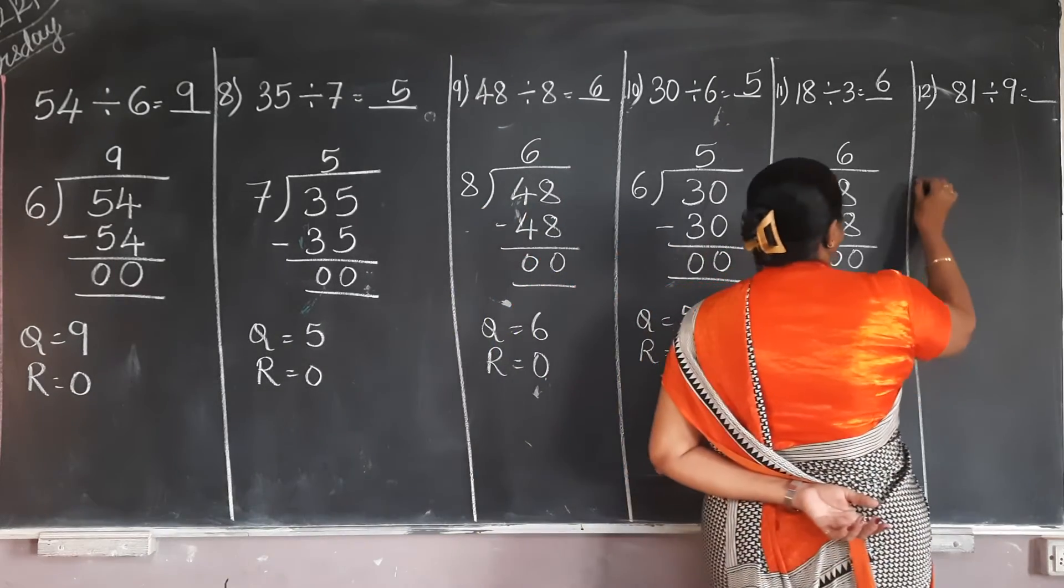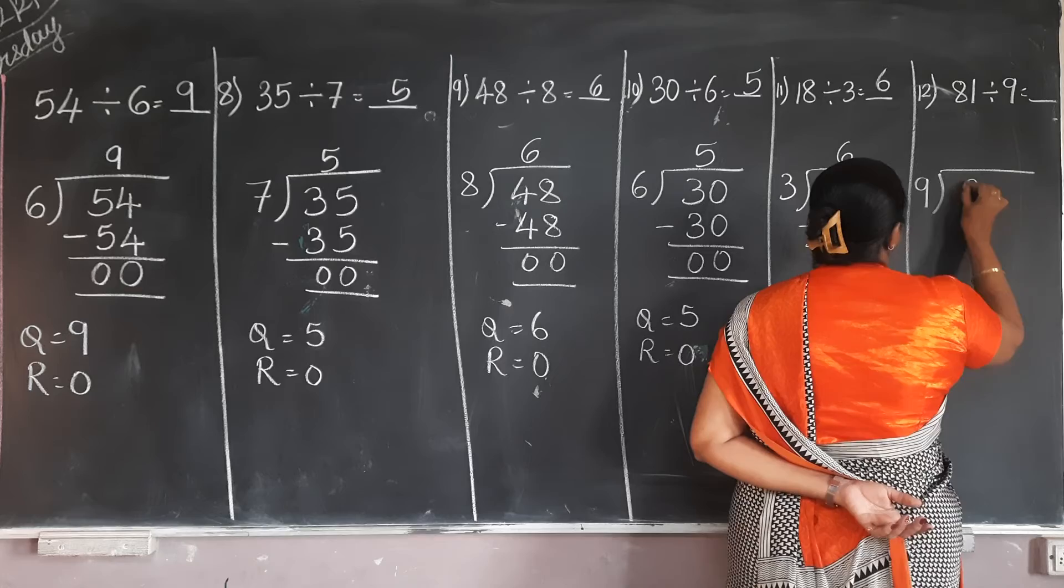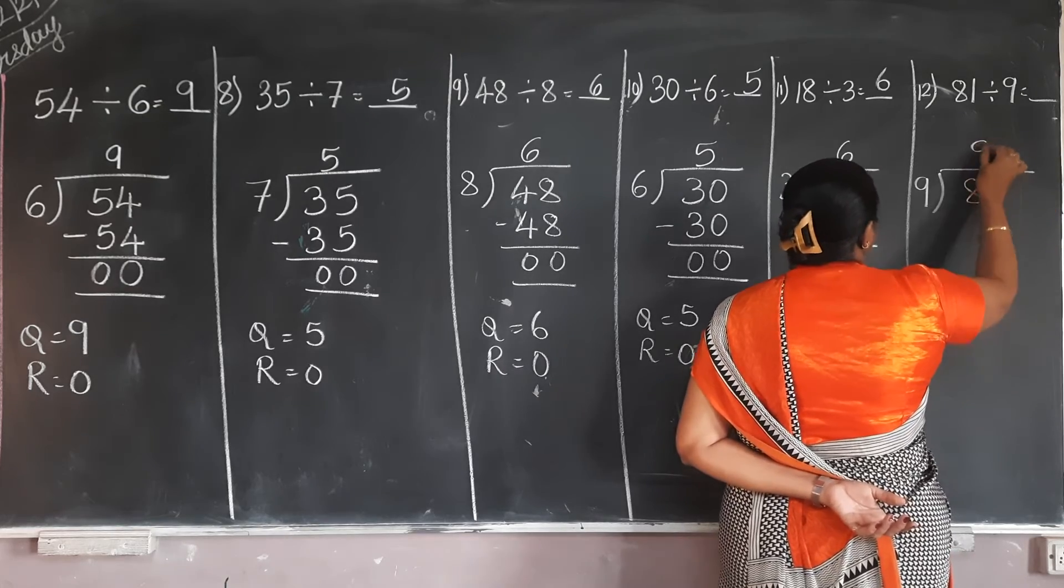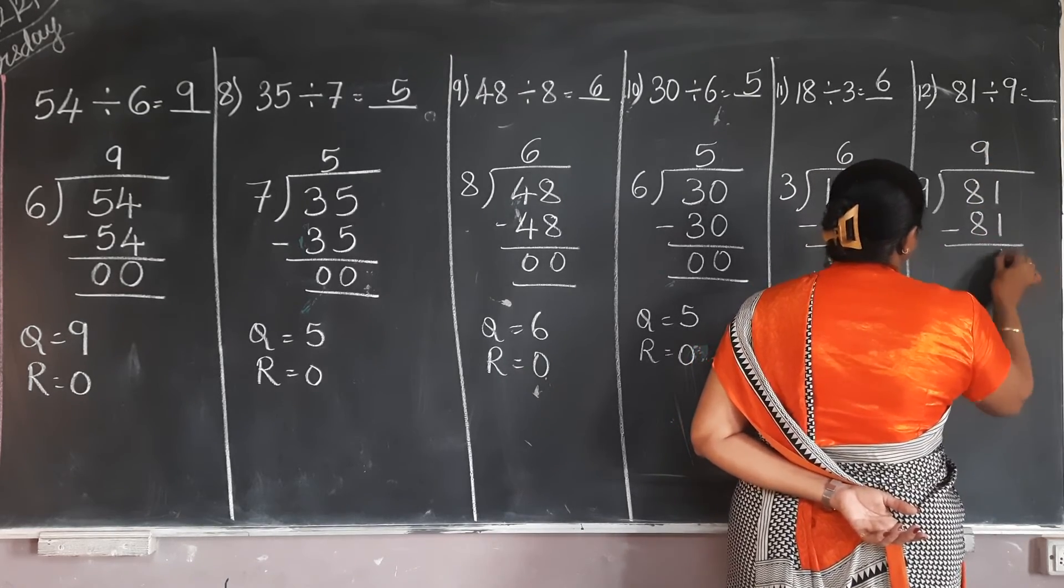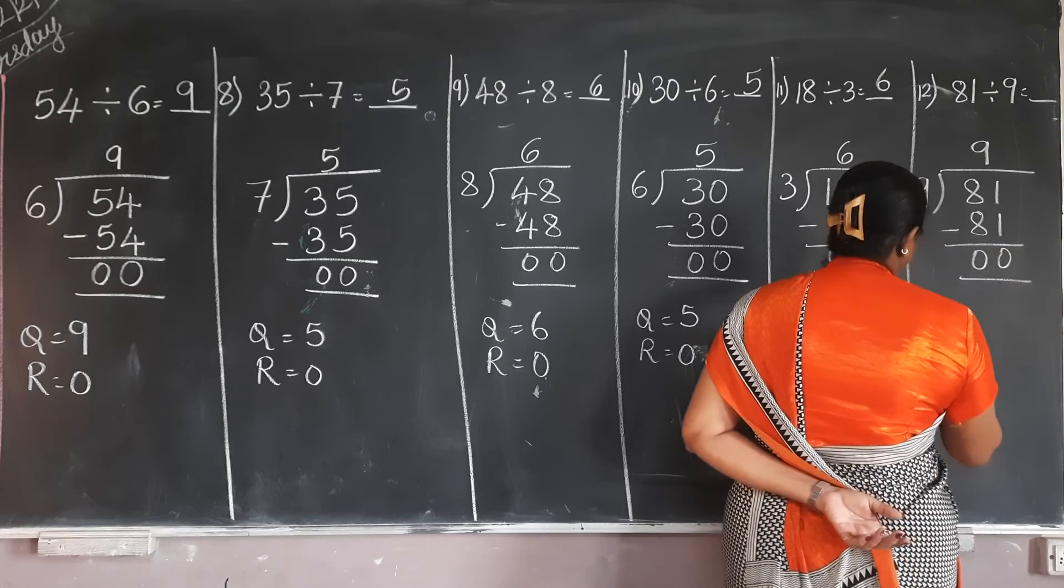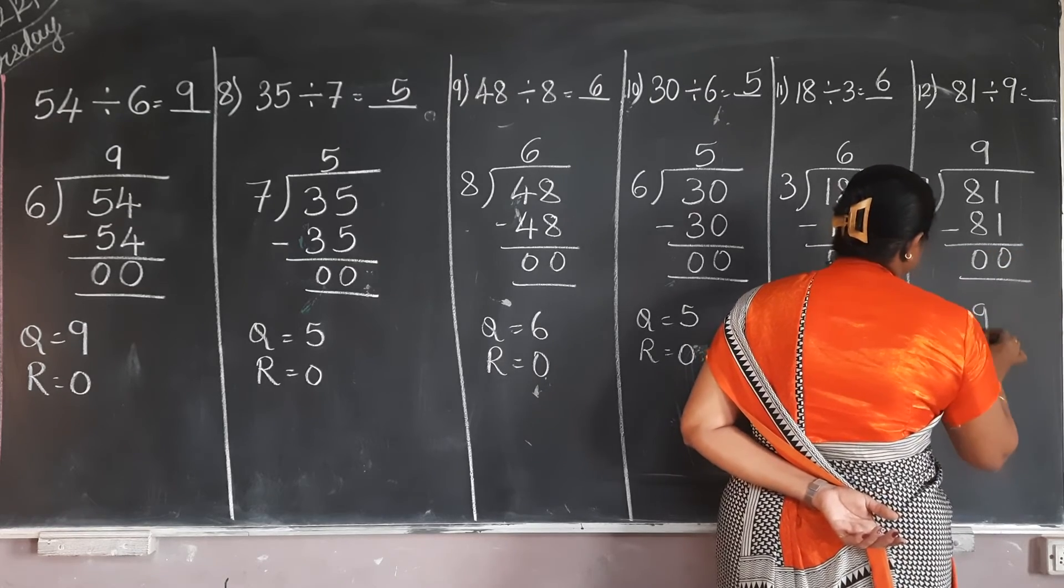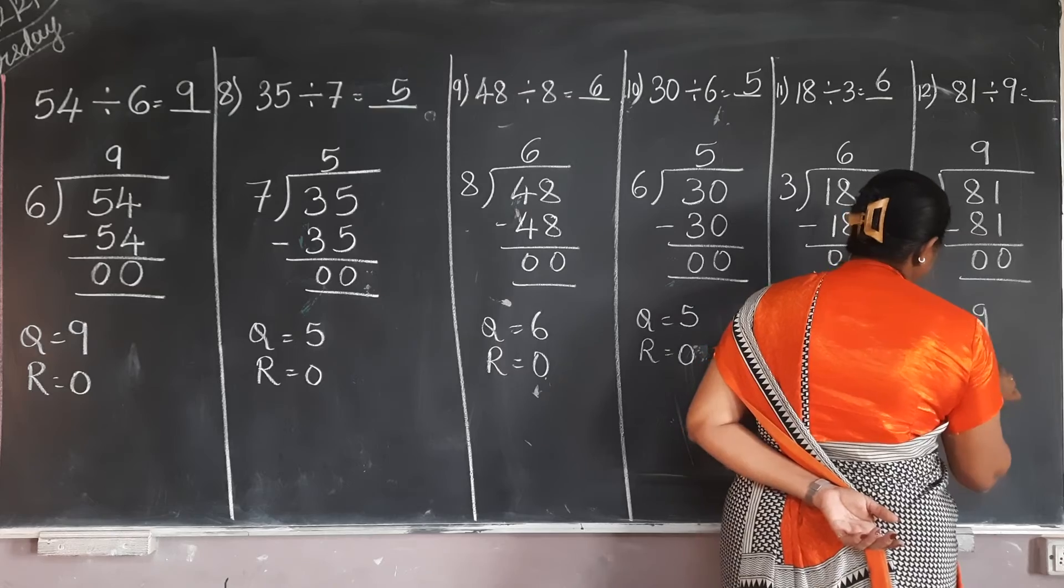9 divided 81. 9's are? 81. Question is 9 and the remainder is 0.